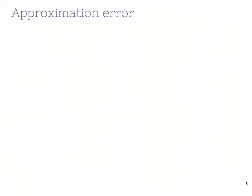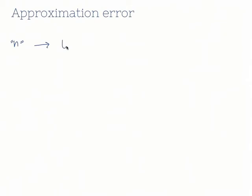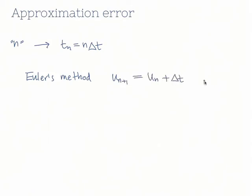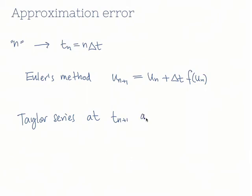But what error do we make in this approximation? Let's use the index n to indicate a time value t n equal to n steps in time. Euler's method is written: u n plus 1 is equal to u n plus delta t times f of u n. To analyze the error of the approximation, we use a Taylor series at t n plus 1 about the solution at t n.